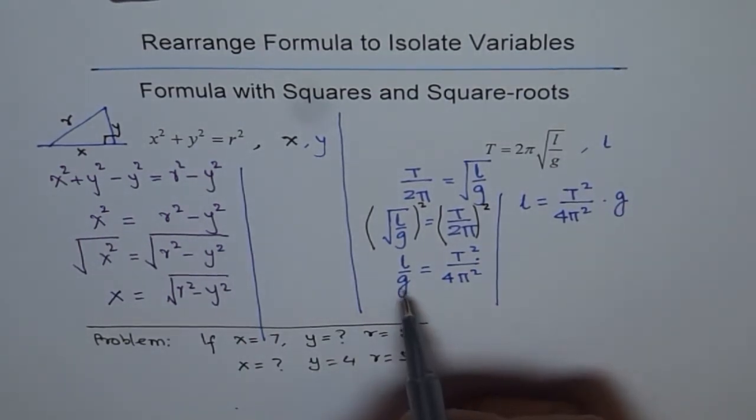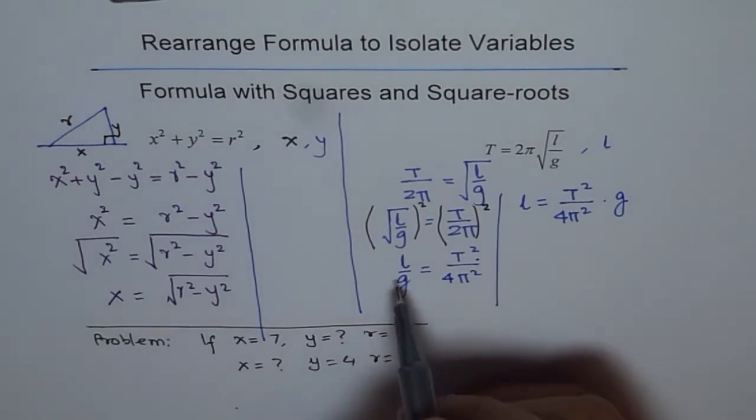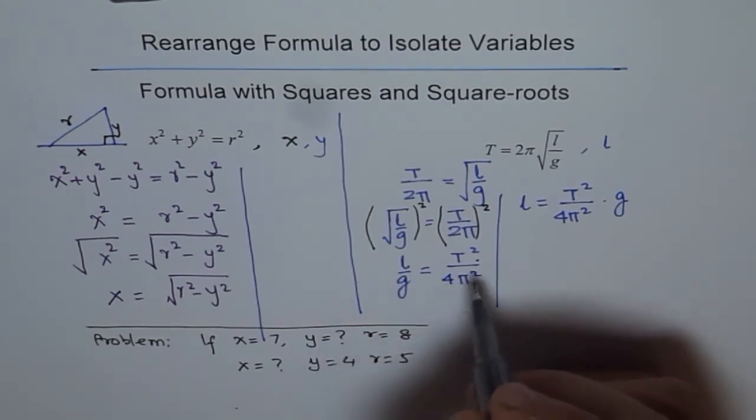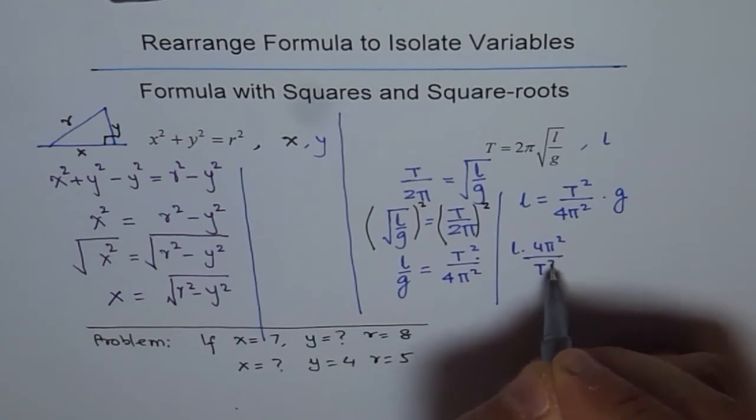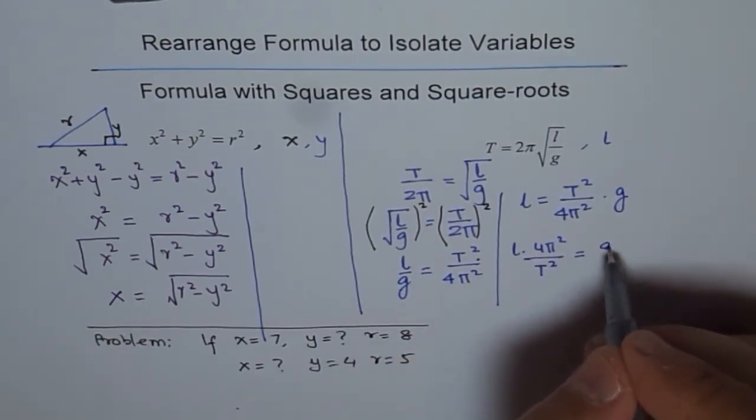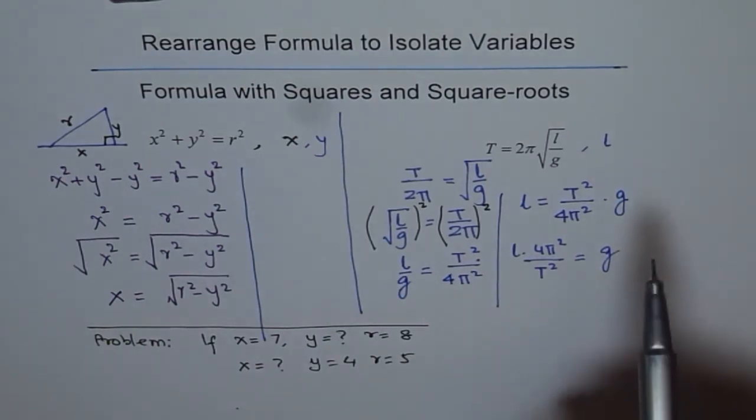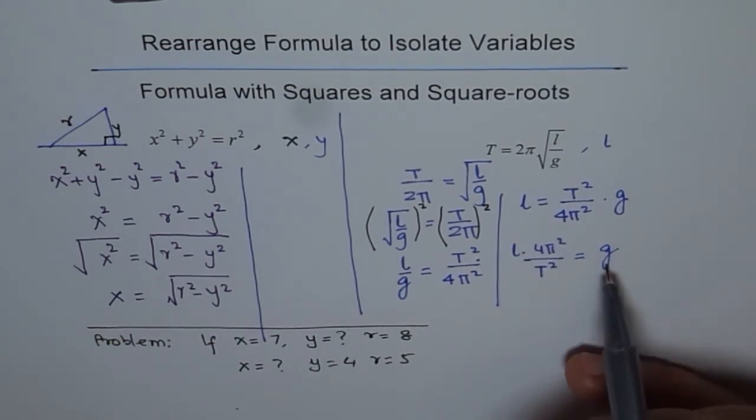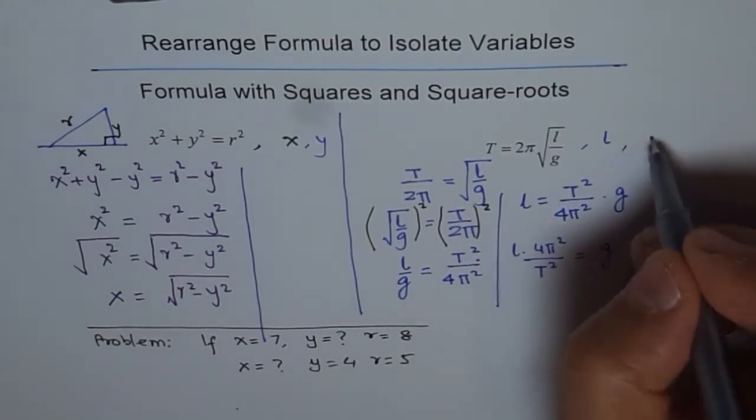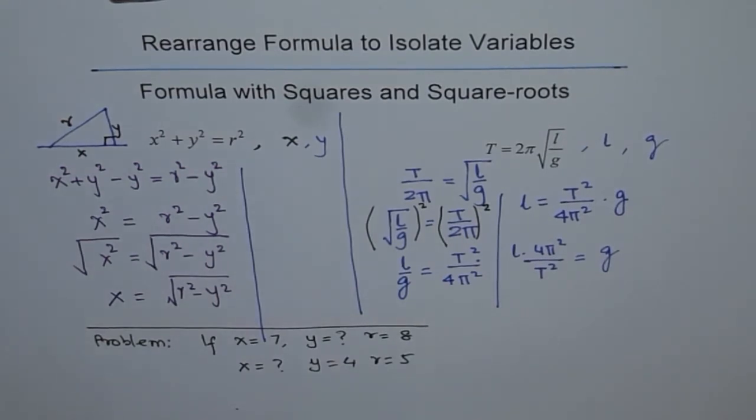Now, if you have to find g from here, how will you do? So, what we can do is we can multiply by g and divide by this. So, we will just cross multiply. That is what we call cross multiply. So, if you do that, you get l times 4π² divided by T² equals to g. So, that is what you get. So, what we did here kind of divide by T² and multiply by 4π² and you can isolate g. So, we did g also for you. So, that is how we can use this formula to rearrange and find the variable.